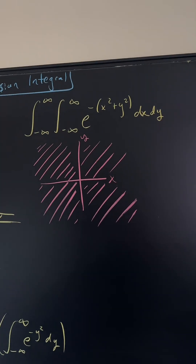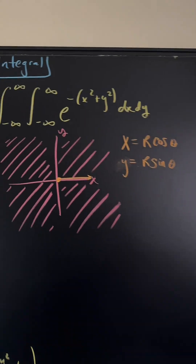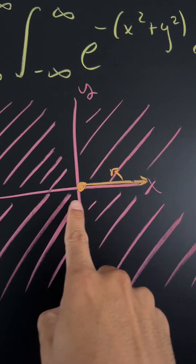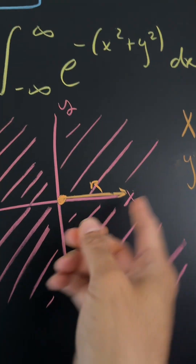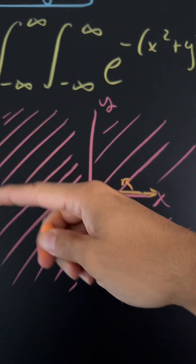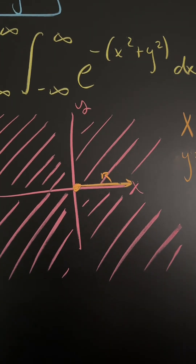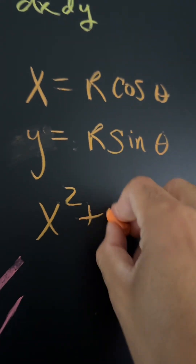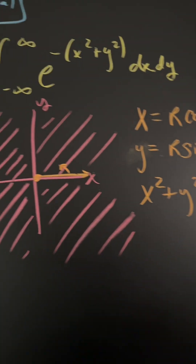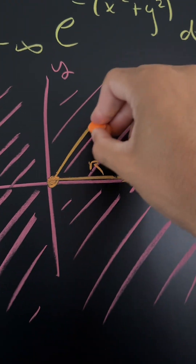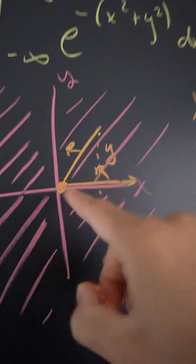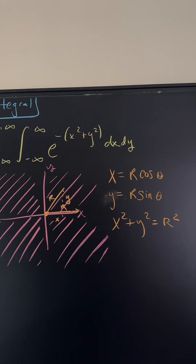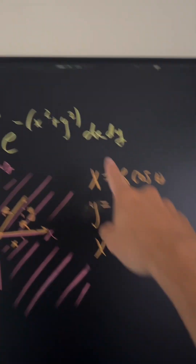So we're going to use something called polar coordinates, which allows us to move in circles. You have a value r — the distance from the origin to some point — and theta, which lets you rotate about the xy plane. The key relationship is that x squared plus y squared equals r squared, which you can see from the Pythagorean theorem: if x and y are the legs, then r is the hypotenuse. This relationship means we can replace x squared plus y squared with r squared.